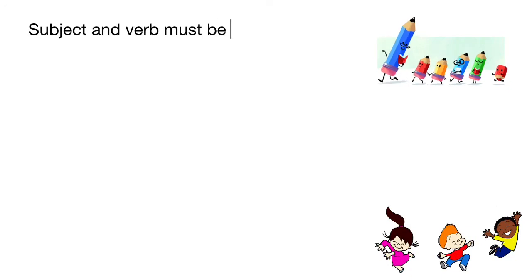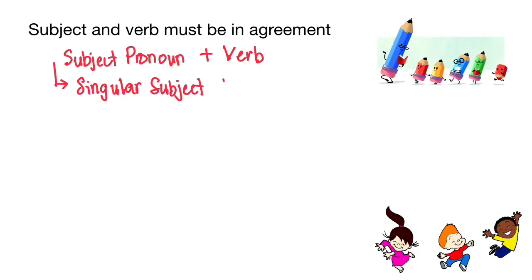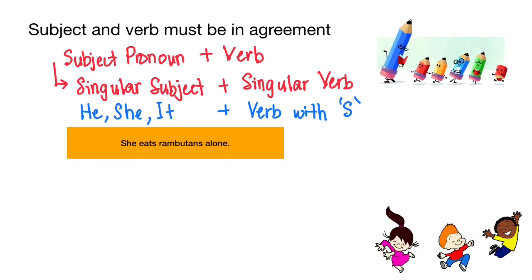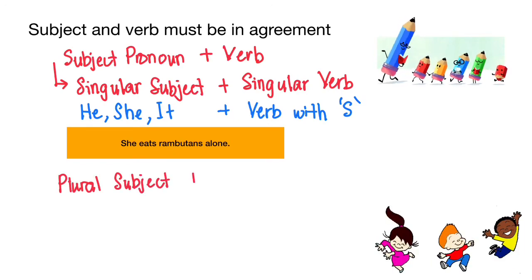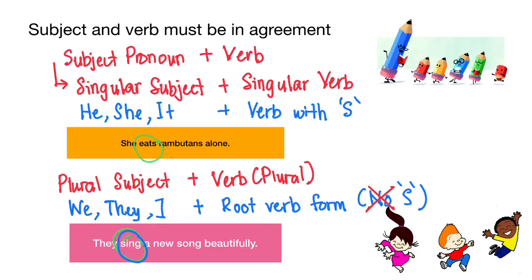Please make sure that the subject and verb in the sentence are in agreement. For example, a singular subject must be followed by a singular verb. What is a singular verb? A singular verb is a verb with -s. For example, she eats rambutans alone. And for a plural subject, it must be followed by a verb in plural form, which is the root verb form, without -s. For example, they sing a new song beautifully.